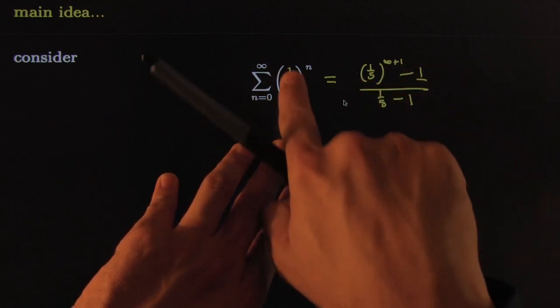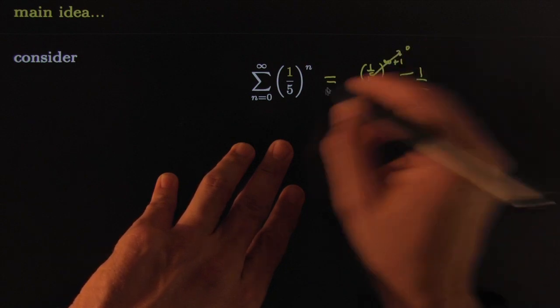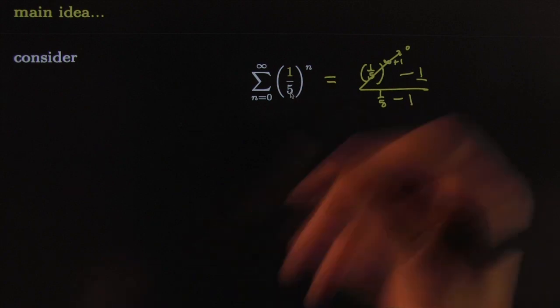Again and again, if this guy is smaller than one in absolute value, that forces this guy to go to zero, and so you're left with a nice sum. This will definitely converge. And then the question arises: